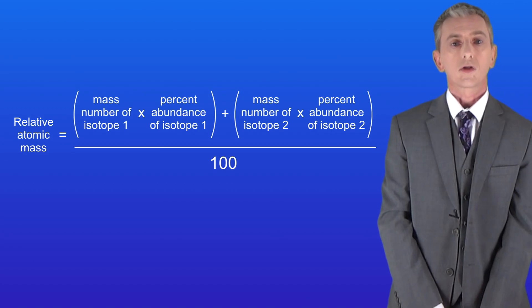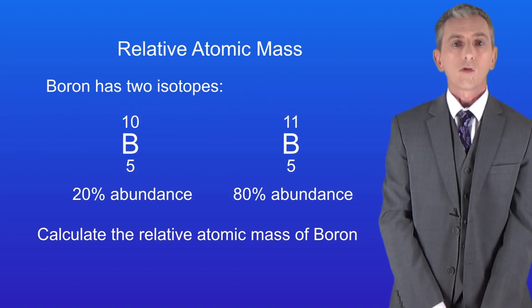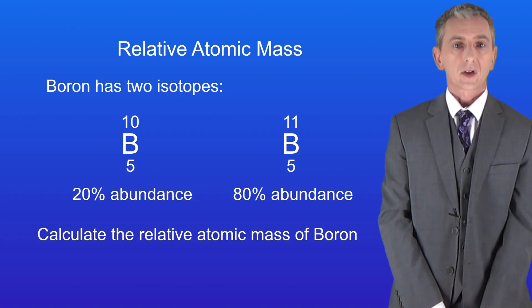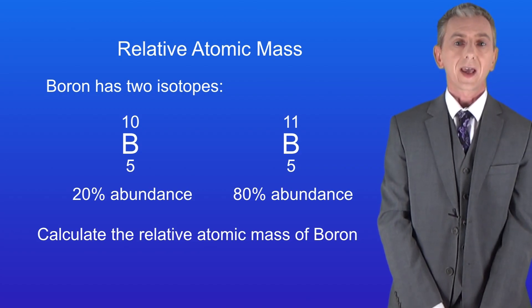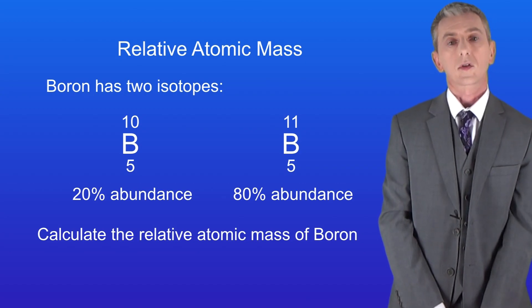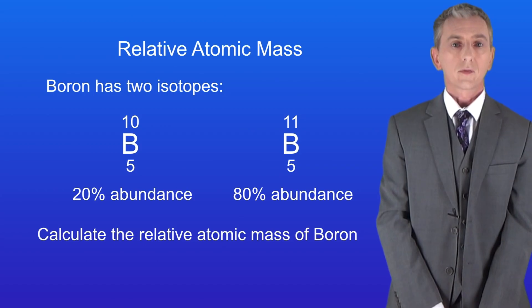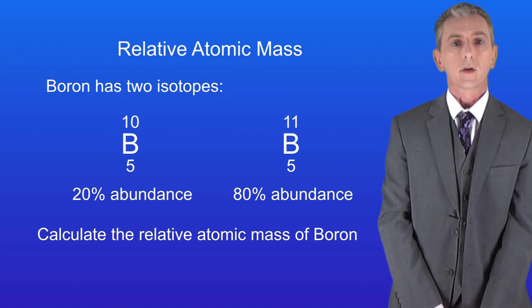Here's an example for you to try. Boron has two common isotopes. The first has a mass number of 10 and this has a 20 percent abundance. The second has a mass number of 11 and this has an 80 percent abundance. So I'd like you to pause the video now and calculate the relative atomic mass of boron.